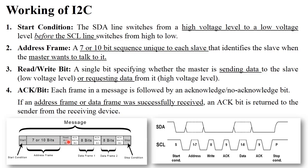After the address and read/write bit, there is an acknowledgement bit. Then the master sends eight bits of data to the slave — this is data frame one. After receiving the data, the slave sends an acknowledgement bit back to the master. Then the master sends another eight bits of data, and the slave again sends an acknowledgement bit. After all data is sent, there is a stop condition: SDA goes from low to high, and then SCL goes from low to high.